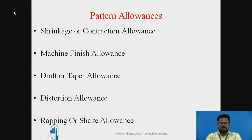Next is Distortion Allowance. This allowance is provided on patterns whose castings tend to distort on cooling. It is generally required for flat, long, V-shaped, and U-shaped castings. To obtain the proper casting shape, the pattern itself is distorted, which yields a casting of the required shape. Next is Rapping or Shaking Allowance. When the pattern is rapped for easy withdrawal, the mold cavity gets enlarged. To account for this, the pattern size is reduced. This allowance is very important in the case of precision casting.